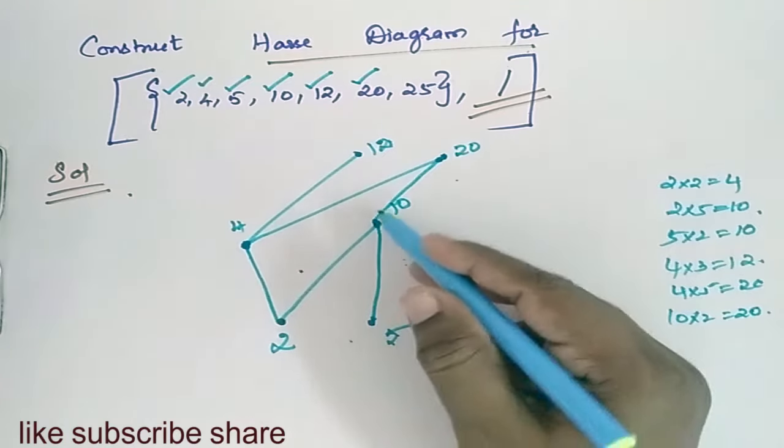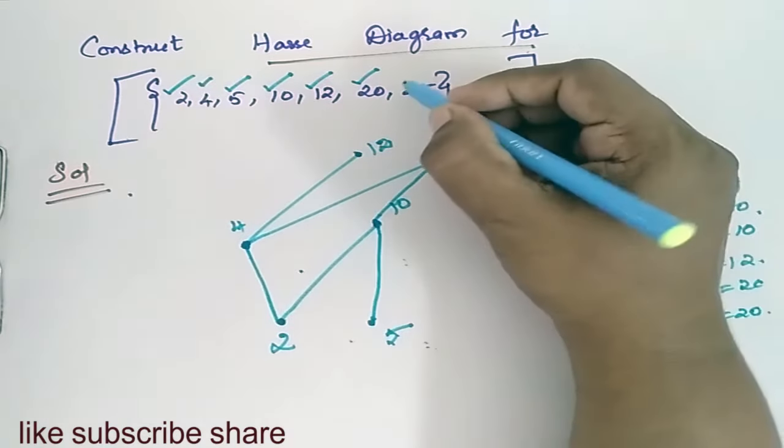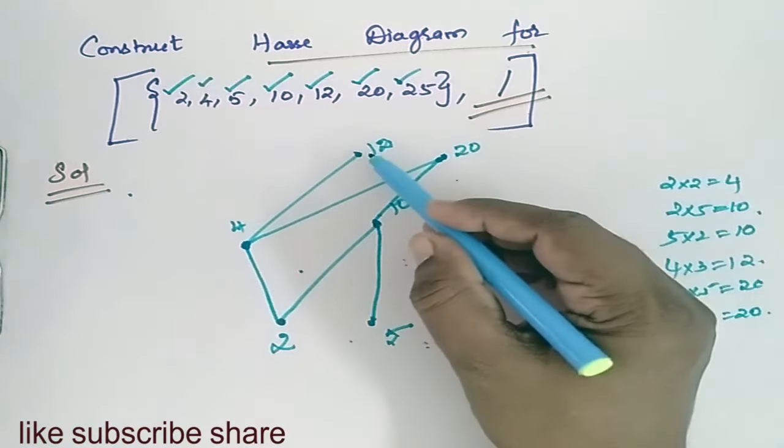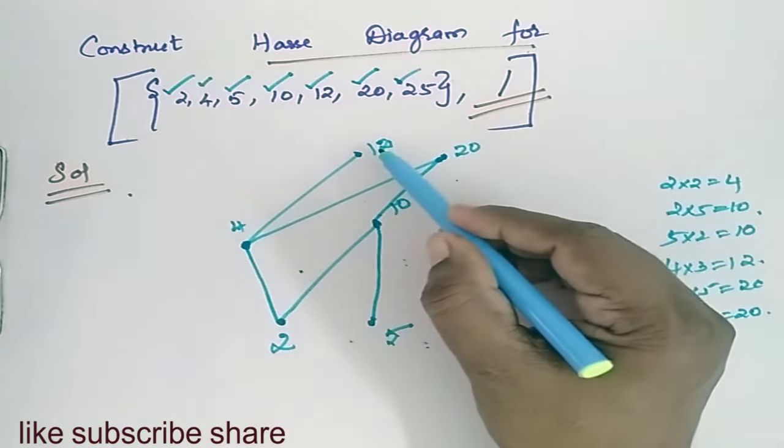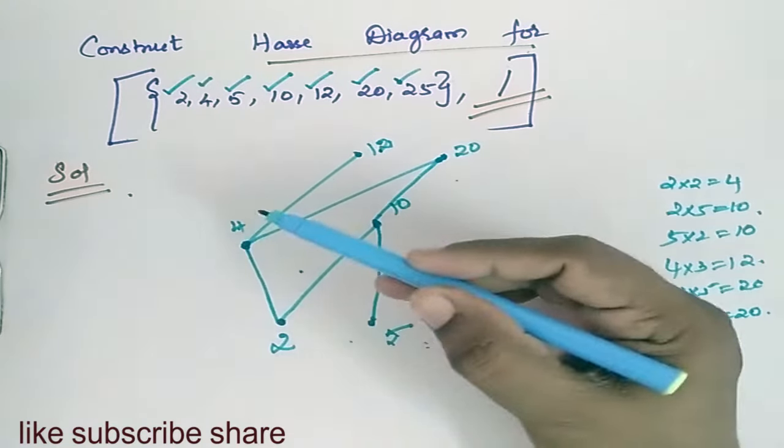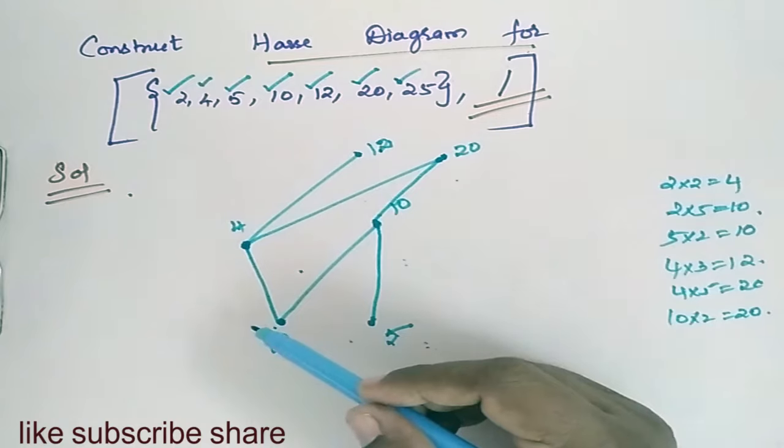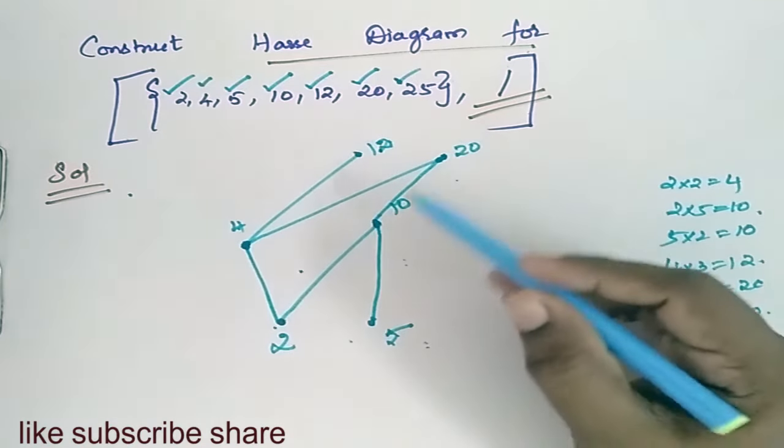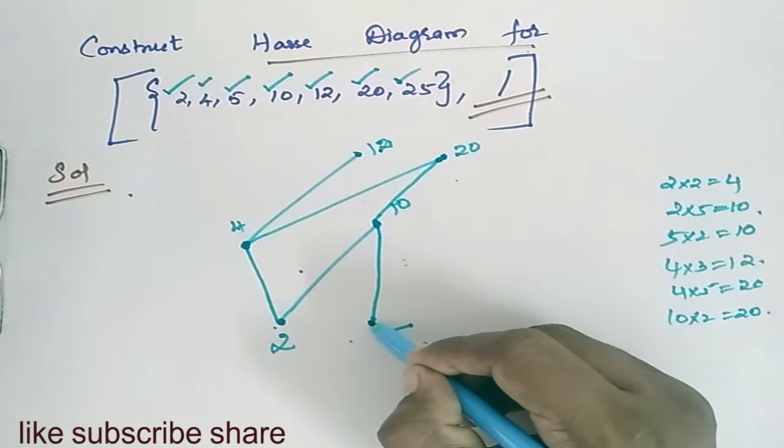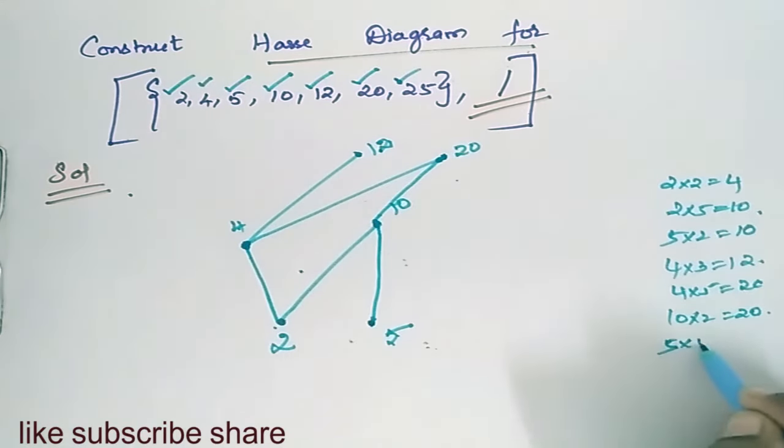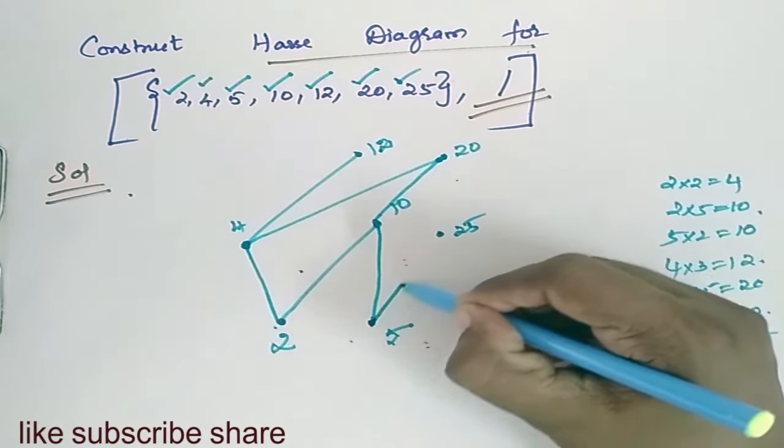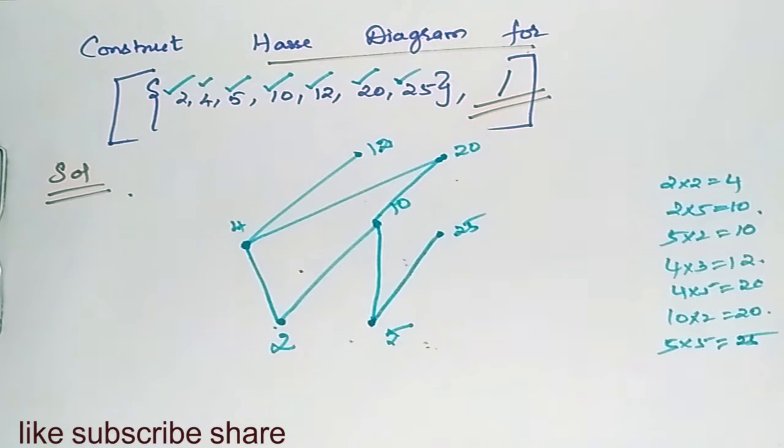We now come for the inferior elements. Then next it is 25. First I will check out with the superior, and then I will come for the next inferior elements. 12 divides 25, no. 4 divides 25, no. 2 divides 25, no. 20 divides 25, no. 10 divides 25, no. 5 divides 25, yes. 5 5s are 25. So I will have an H for 25 from 5.